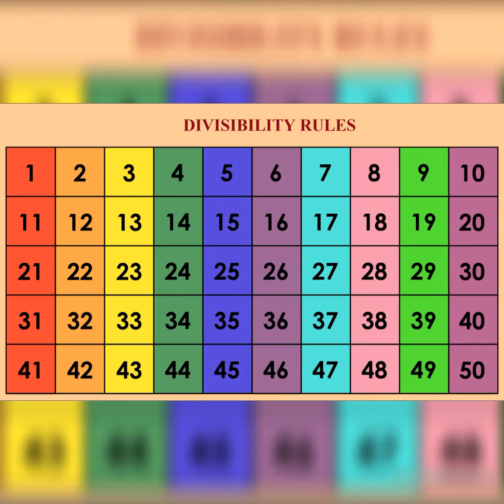Divisibility by 6 – a number is divisible by 6 if it is divisible by both 2 and 3.